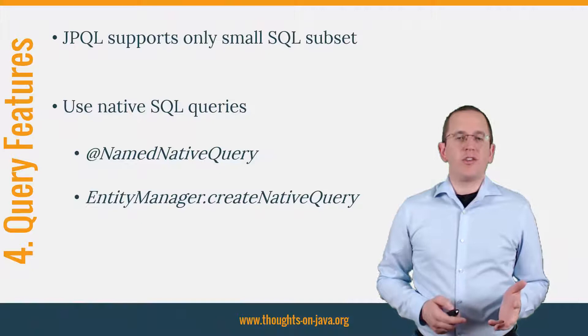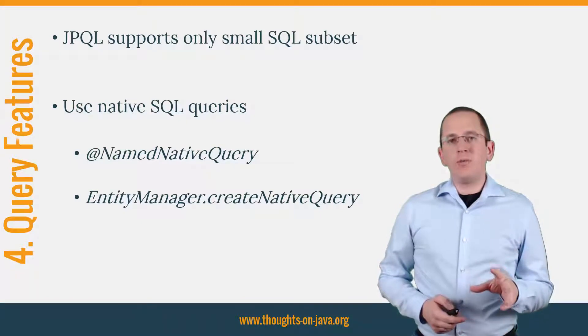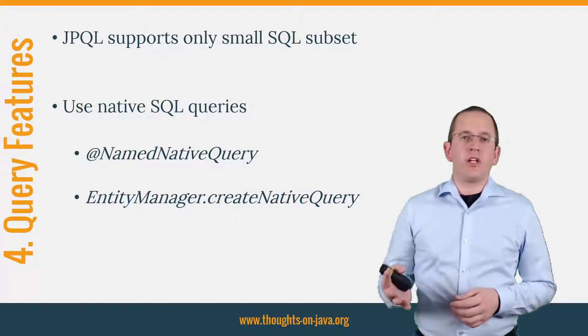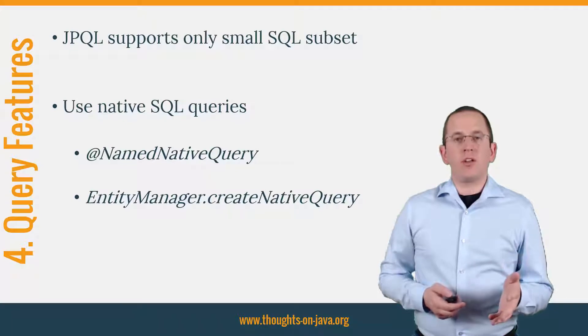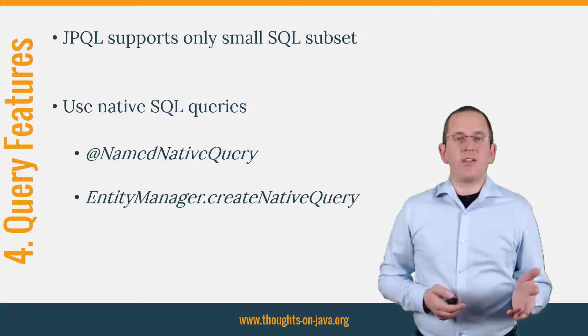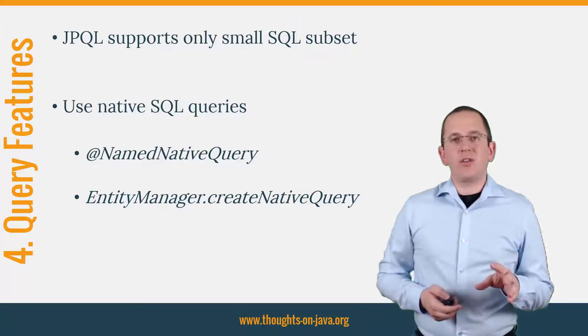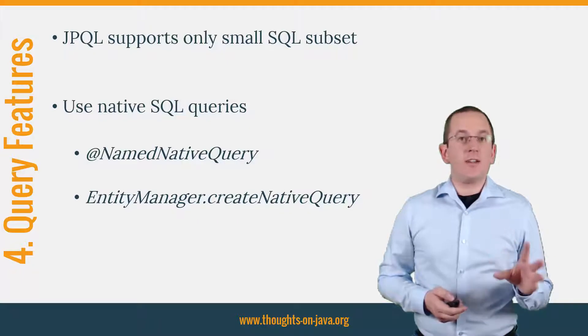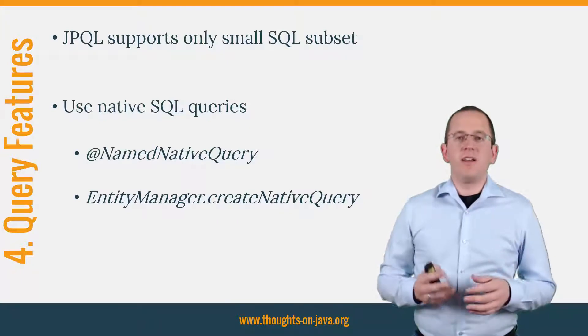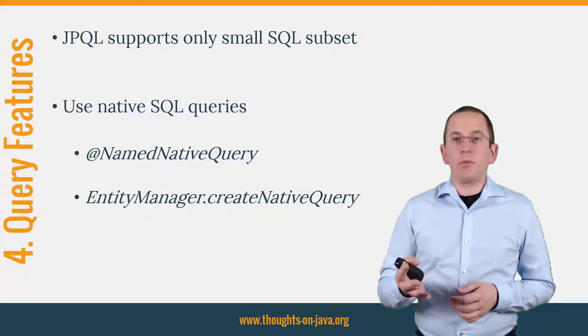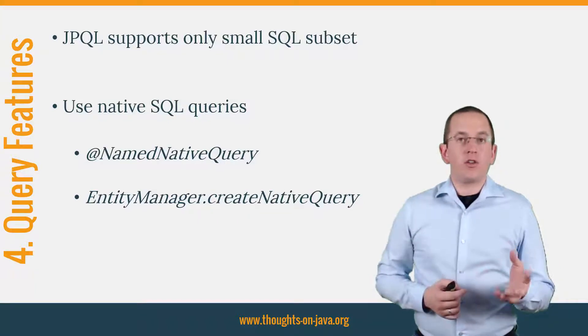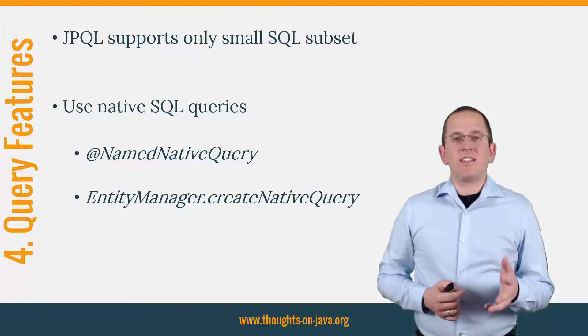4. Use PostgreSQL specific query features. When you're familiar with JPQL and SQL, you already know that JPQL supports only a small subset of the SQL standard. But that's not a real issue. Because if JPQL isn't powerful enough to implement your use case, you can use a native SQL query instead. Native SQL queries allow you to use the full SQL feature set including all database specific features. You can create them in a similar way as your JPQL queries. You can define a NamedNativeQuery with a NamedNativeQuery annotation or create an AdHocNativeQuery by calling the CreateNativeQuery method on the EntityManager. Let's take a quick look at an example.